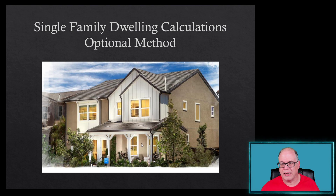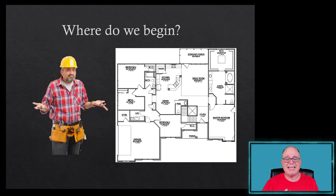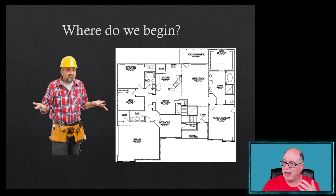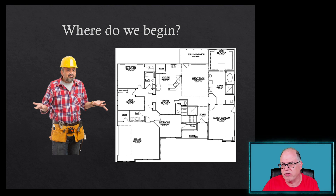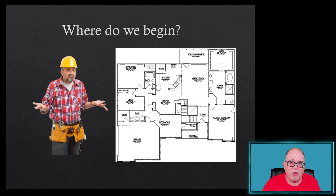Here's our dwelling — probably a familiar one if you were in the series where we did the standard method. Where do we start? Like any calculation for service, we have to know what's going into the dwelling. We need to know what the appliances are, how many small appliance branch circuits we're going to have, how many laundry circuits we're going to have, the outside dimensions, and what needs to be excluded — open porches, garages, attic space not adaptable for future use. You're the electrician; you need to compile this information from the general contractor or the owner.